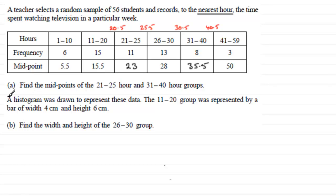Now for this next part, we've got a histogram that was drawn to represent this data. And the 11 to 20 group was represented by a bar of width 4cm and a height of 6cm. And in part B, we've got to find the width and height of the 26 to 30 group. Now to do anything like this, what I tend to do is a sketch.